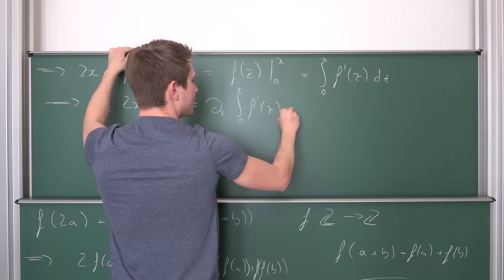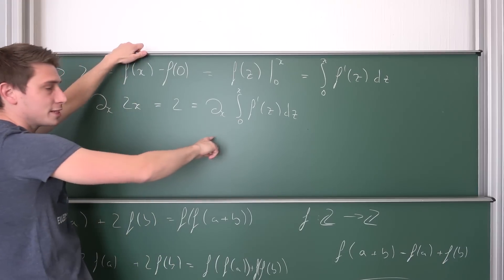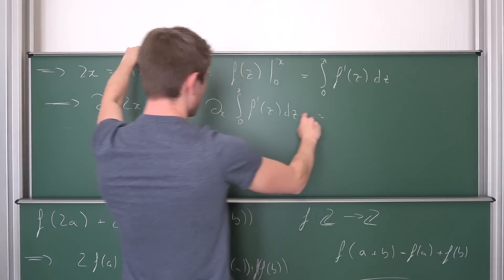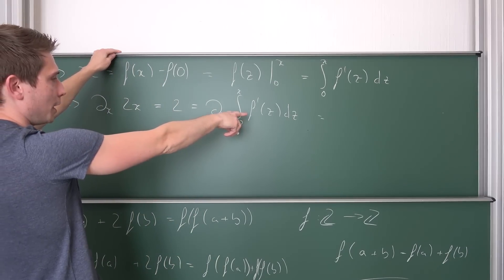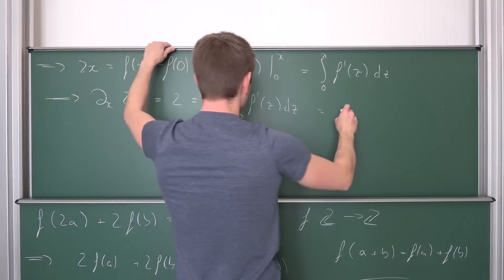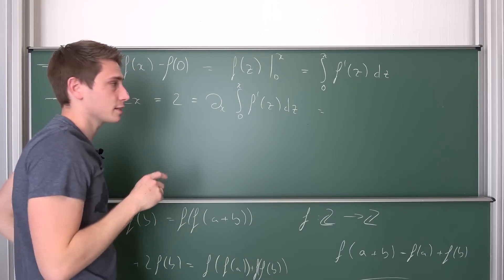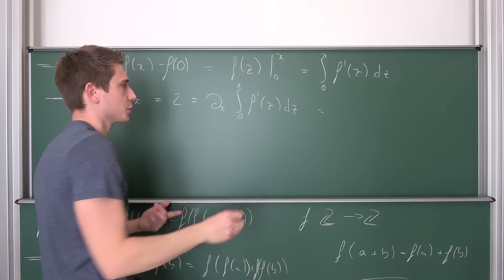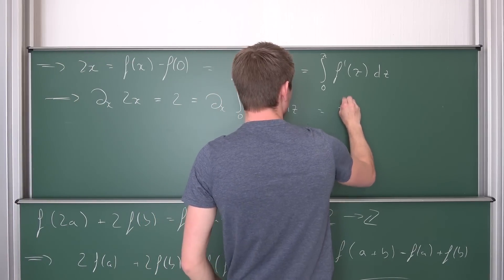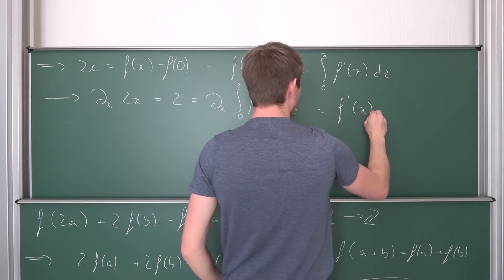So by the fundamental theorem of calculus, this is going to give us f' at the spot x. Because we are differentiating this, it's kind of like with the Leibniz rule for integration basically. So this is going to give us f'(x).